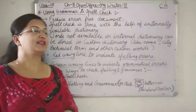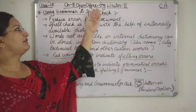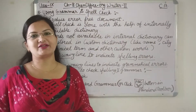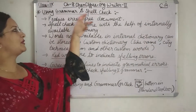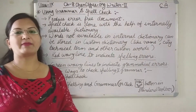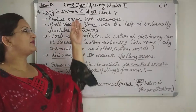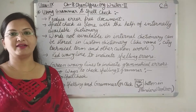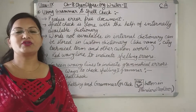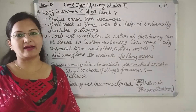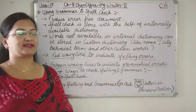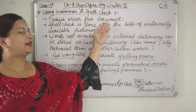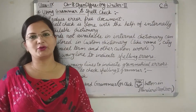Welcome to CA class. Today we will continue the same chapter OpenOffice.org Writer 2 and today we will study about grammar and spell check. In Writer, the grammar and spell check is there to check spelling mistakes and grammatical mistakes, so this way an error free document is produced.